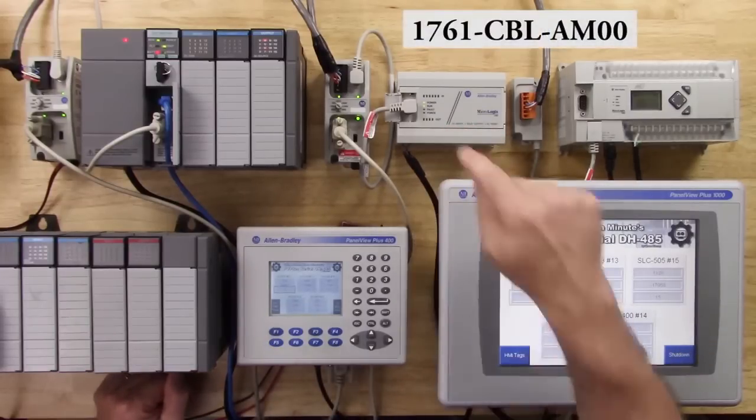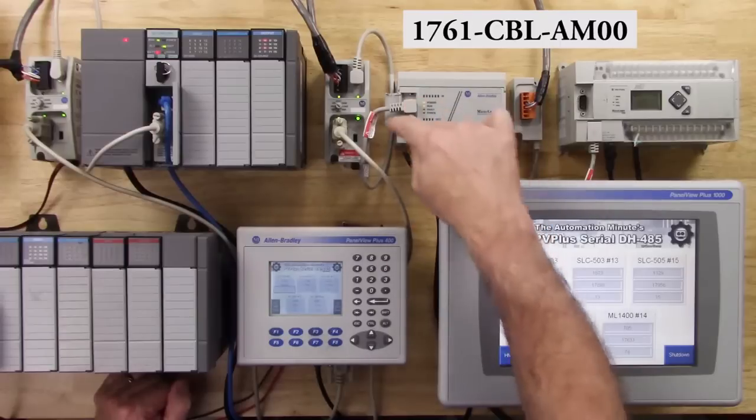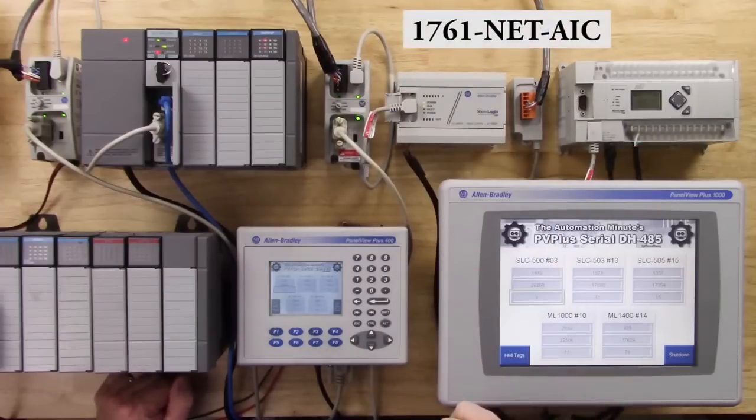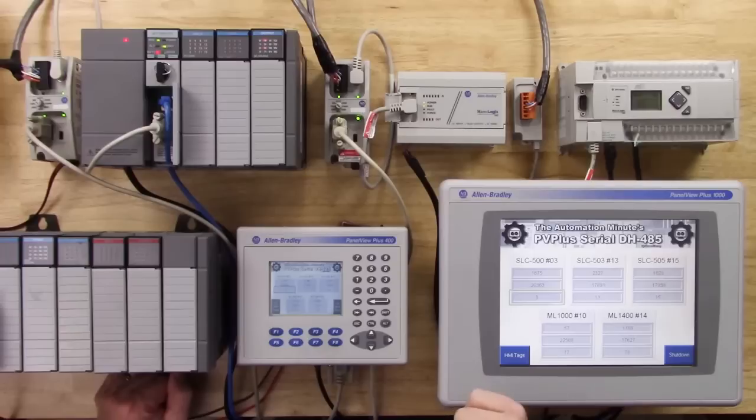Now here on the MicroLogix 1000, I have it connected mini-din to mini-din, and it's providing power to this AIC+. Then this unit is set up as address 10.